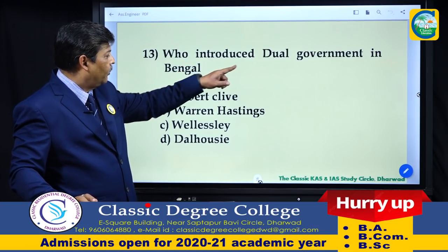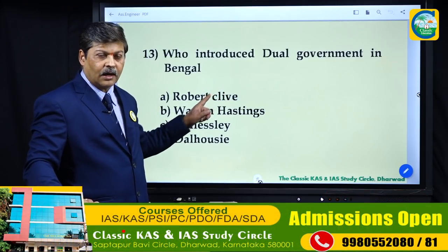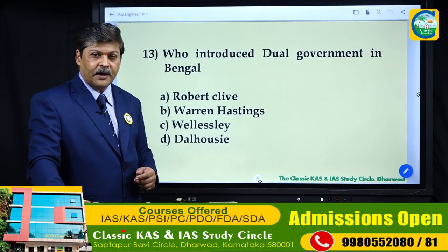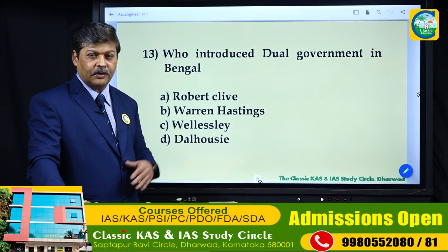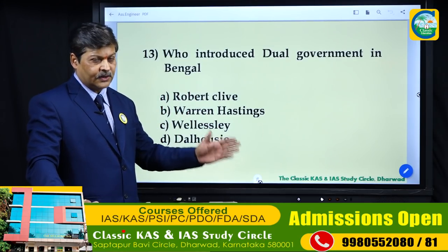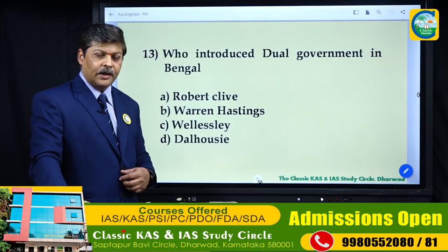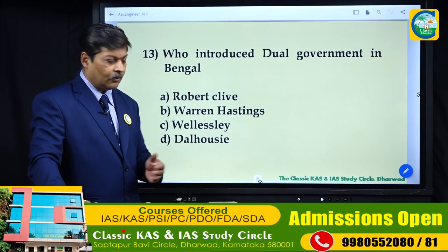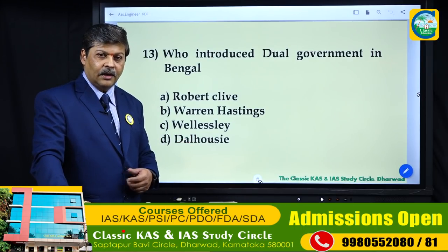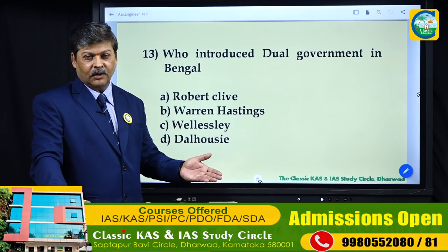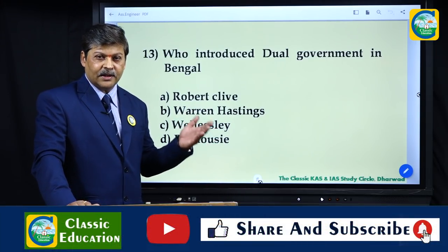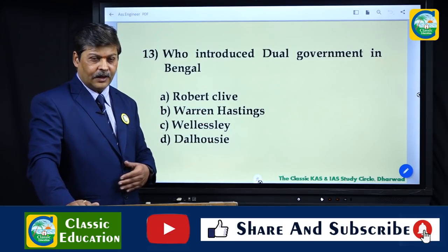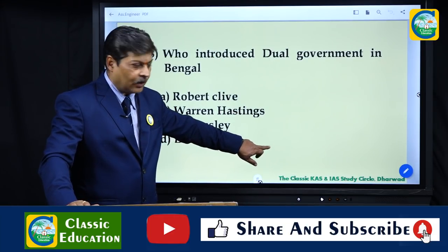Who introduced Dual Government in Bengal? It was introduced by Robert Clive in 1765. Warren Hastings was the first Governor General of Bengal; Wellesley introduced the Subsidiary Alliance; Dalhousie introduced the Doctrine of Lapse; and Robert Clive introduced Dual Government.